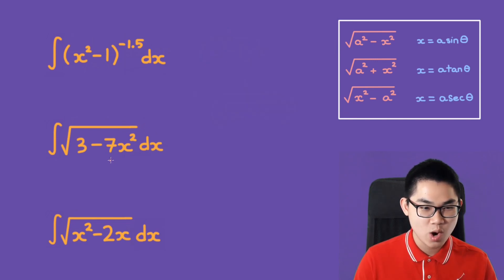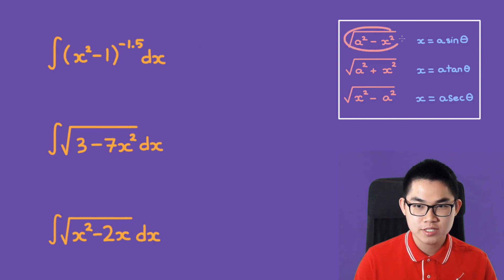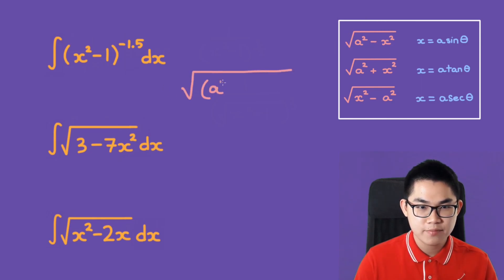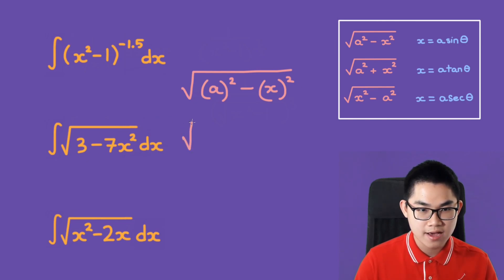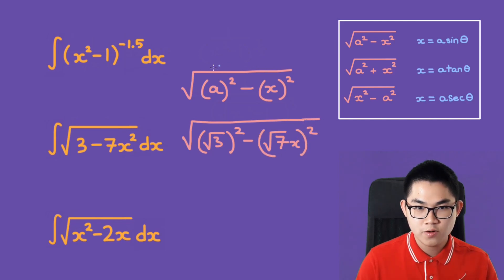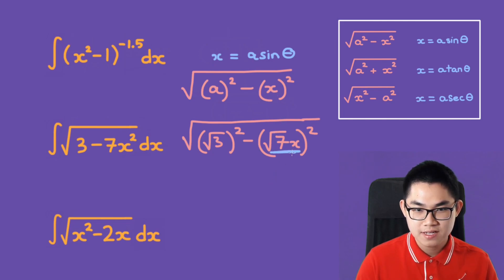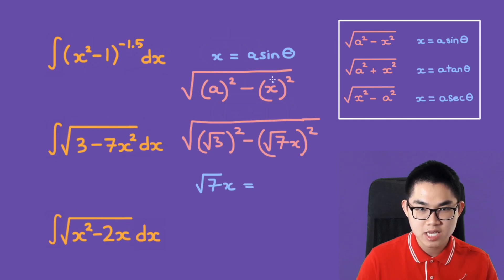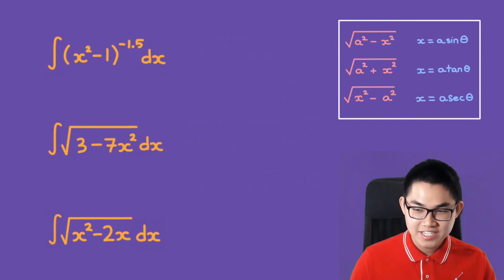On a test, you might see a coefficient in front of x². For example, with √(3² − (√7·x)²), the formula x = a·sinθ becomes √7·x = √3·sinθ instead.